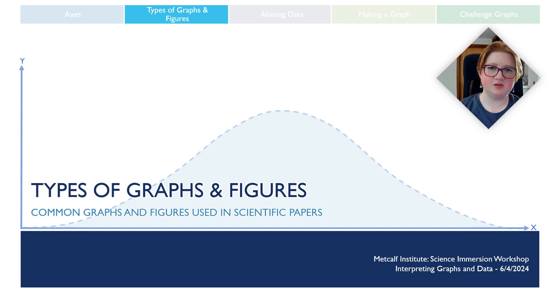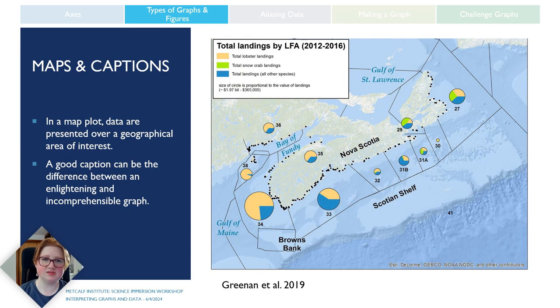While line graphs are some of the most common depictions of data, they are not the only ones that scientists use. Let's talk about some of the common ones found in scientific research. With map plots, the collected data are displayed over geospatial areas of interest. While these are fairly intuitive, a good caption is critical to helping readers understand the link between data and the geospatial location. For example, looking at this graph, we can see that this is Nova Scotia, but without looking at the legend or any captions, it's really hard to understand what we're looking at. So these legends and our captions are going to basically function as our axes in order to understand what we are looking at.